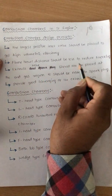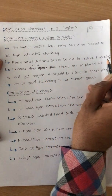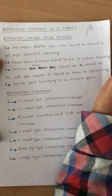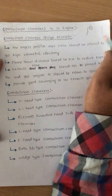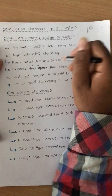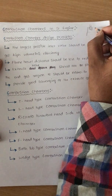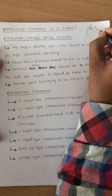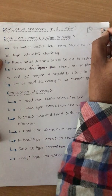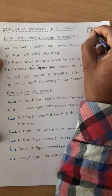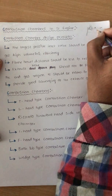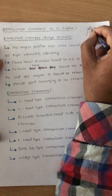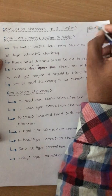Flame travel distance should be less to reduce knocking. We have already discussed in the previous class what knocking is and how flame travel affects knocking. For example, if I place the spark plug in the center and the engine size is small, the flame travel distance is less.